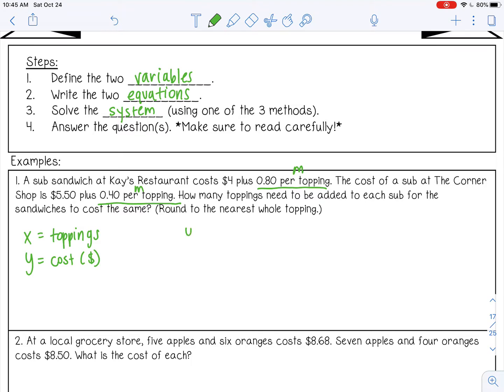So for Kay's restaurant, it's $0.80 per topping. So 0.8x, you can leave off the ending zero if you want, plus a $4 flat fee. And then for the corner shop, it's $0.40 per topping times x, that's our toppings, plus a $5.50 fee. So y is our total cost.